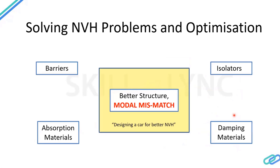How do we solve these problems and optimize the solutions? There are many methods to reduce noise and vibration. If you're building a house, weight and cost are less of a concern. But in a car, you need to be very sensitive to mass and cost — the objective is to achieve very good noise and vibration quality with minimum mass and cost. We focus on having the best structure early in the design loop, using modal or impedance mismatch, where we try to separate the frequencies of the mode shapes so they don't resonate with each other.